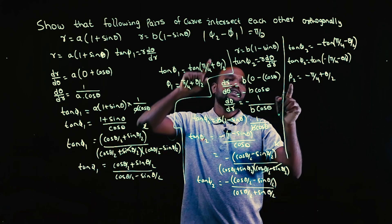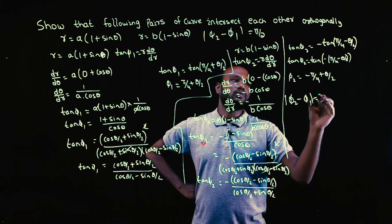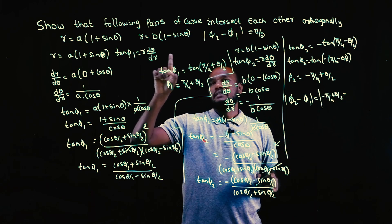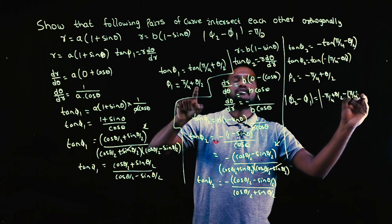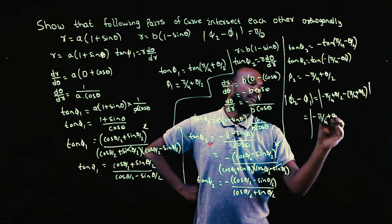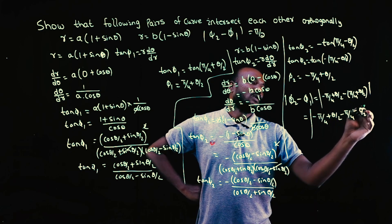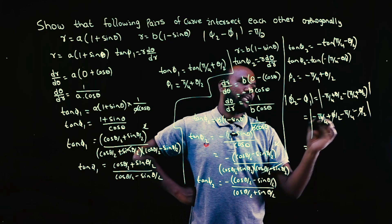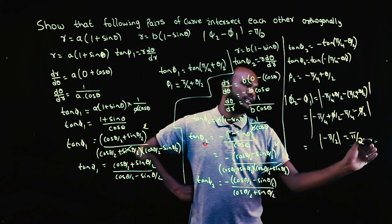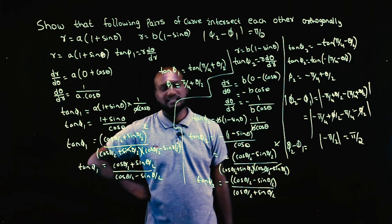Now we compute φ₂ minus φ₁. φ₂ is (−π/4 + θ/2) and φ₁ is (π/4 + θ/2), so φ₂ − φ₁ equals (−π/4 + θ/2) − (π/4 + θ/2). The θ/2 terms cancel, leaving −π/4 − π/4, which is −π/2. Taking the modulus gives π/2. We have shown |φ₂ − φ₁| = π/2, which is exactly what they asked — confirming the curves are orthogonal.